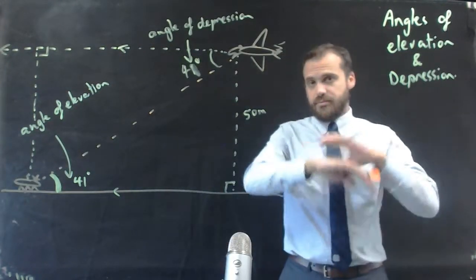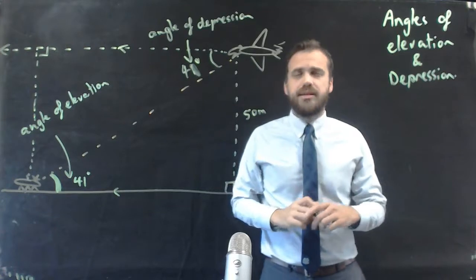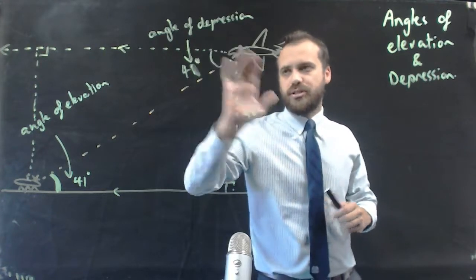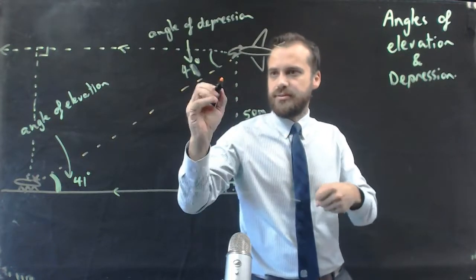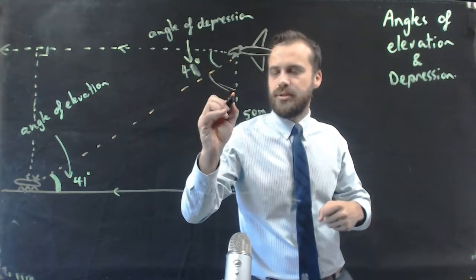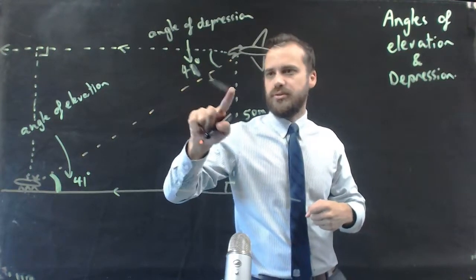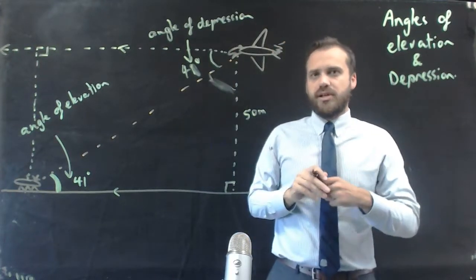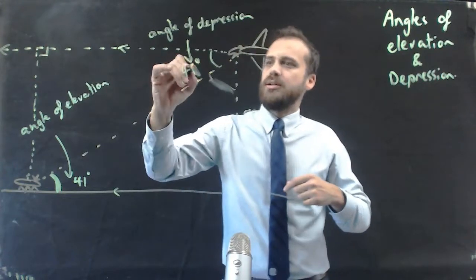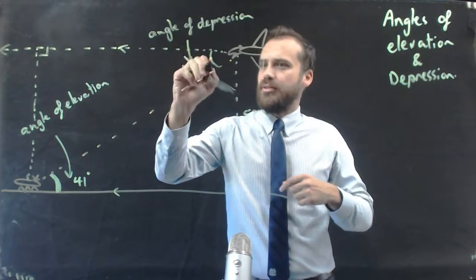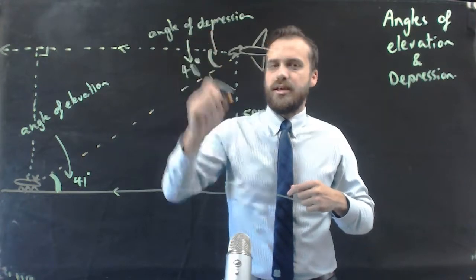The mistake that lots and lots of people make is when it comes to angle of depression. They think that the angle of depression is here, but it's not. In order for you to draw an angle of depression, you have to draw an imaginary line here. And that's your angle of depression, right there.